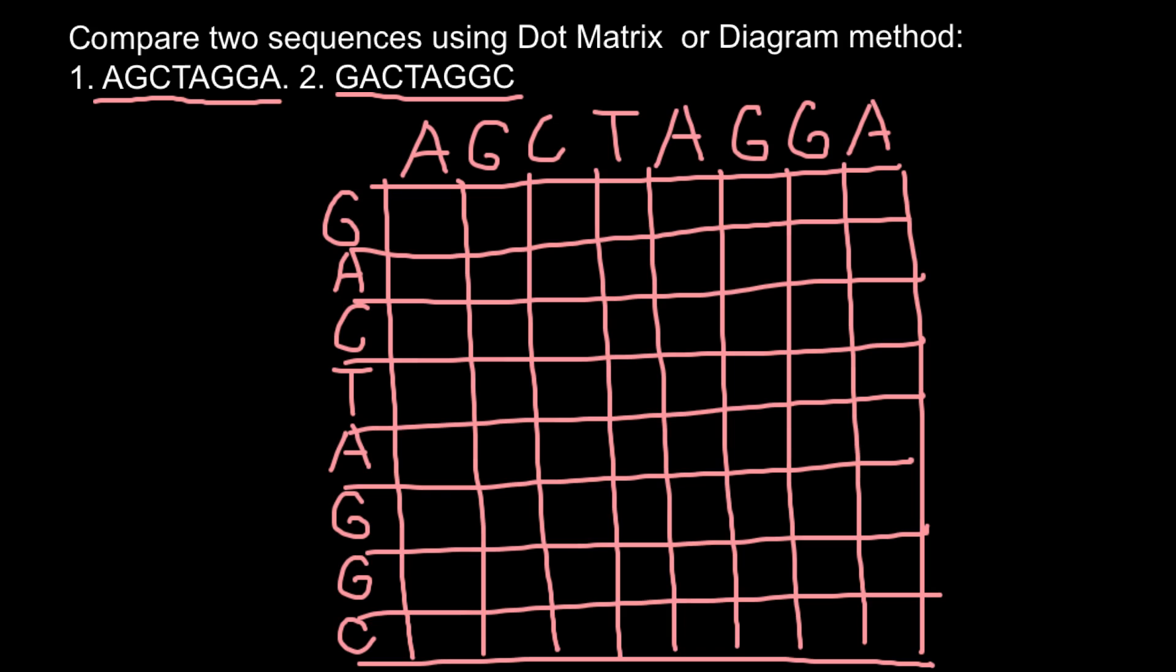Now we have to compare nucleotides on top and on the sides. For example, here on the side we have G and on top we have A, so we can put zero or just leave a blank space because we don't have coincidence. Let's analyze this square: here we have G and G on top, so let's put a dot here. Next we have G and C, so blank space. Once again we have G here and G here, so let's put a dot here and a dot here. We put a dot everywhere where we have the same letters that come from the side and from the top.